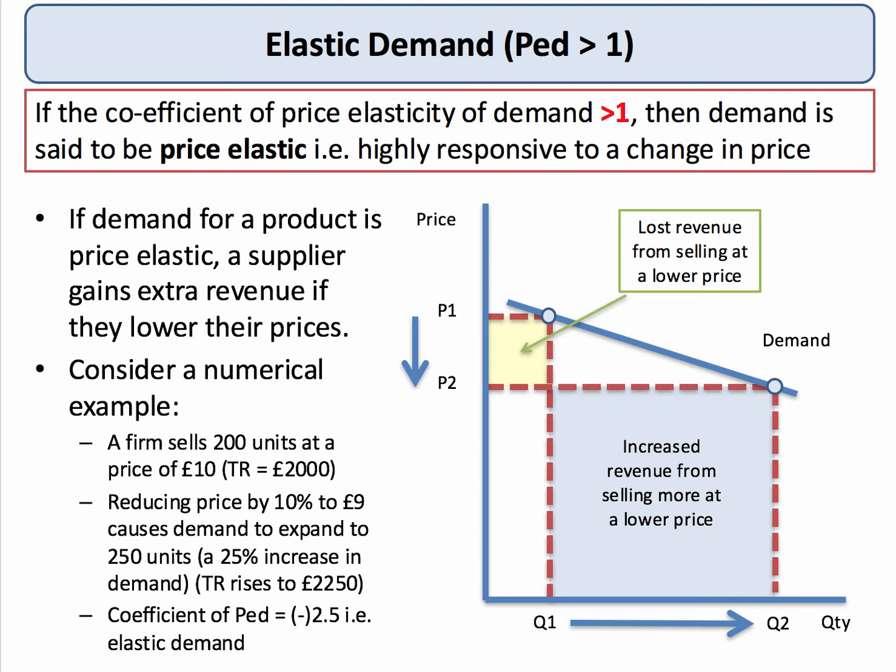One of the key consequences of this is that if demand is price elastic — if the coefficient is greater than 1 — then a supplier will gain extra total revenue (price times quantity) if they cut their prices.